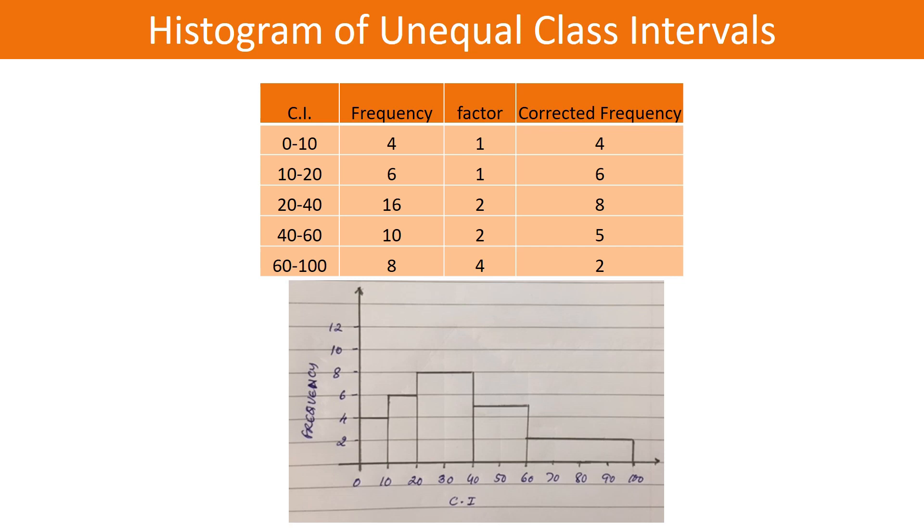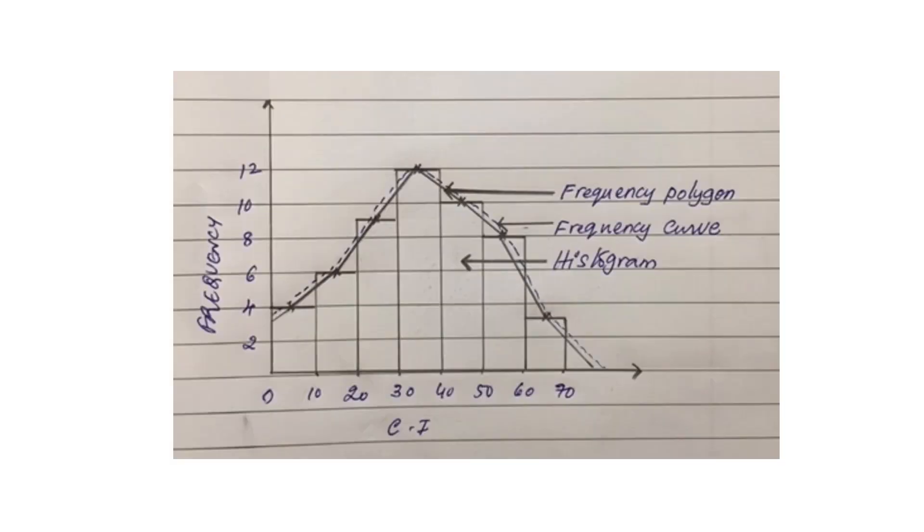Two variations of a histogram are the frequency polygon and frequency curve. First, draw a histogram. In each tower, identify the midpoint and mark it with an X. If you connect all these midpoints with straight lines, you get a frequency polygon. If you connect them with a freehand curve, you get a frequency curve. The dotted lines in the figure represent the frequency curve.